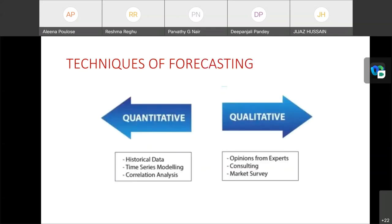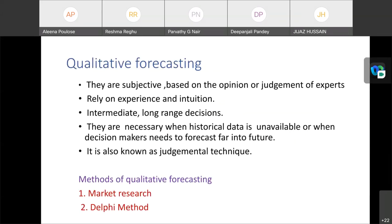Next, we are looking into what are the techniques of forecasting. There are mainly two techniques of forecasting: quantitative and qualitative techniques. First we are looking into qualitative forecasting. Qualitative forecasting are subjective and they are based on the opinion or judgment of experts. They rely on experience and intuition and they are useful for taking intermediate and long range decisions. They are necessary when historical data is unavailable or when decision makers need to forecast far into future. It's also known as judgmental techniques. Here in qualitative forecasting, we are giving more importance to opinion. It is based on the opinion or judgment of the experts.